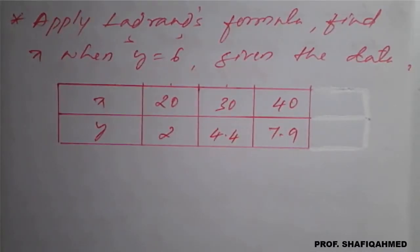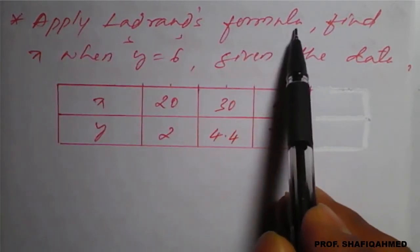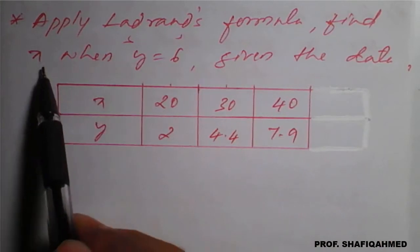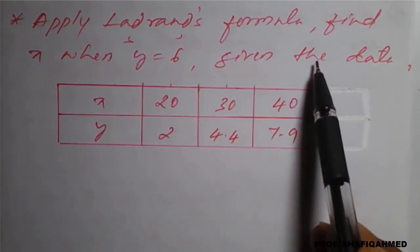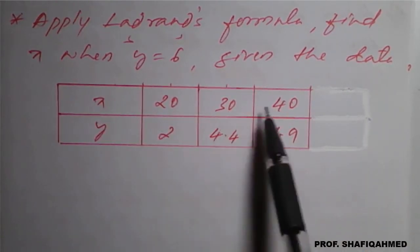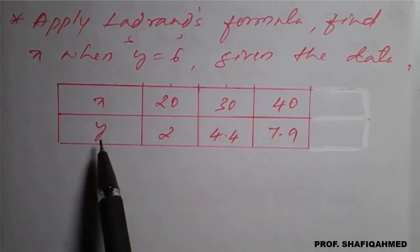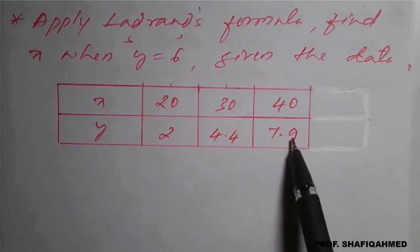Hello, in this lecture we will see a problem based on Lagrange's formula. The problem is: apply Lagrange's formula to find x when y is equal to 6. Given the data, x values are 20, 30, 40 and y values are 2, 4.4, 7.9.